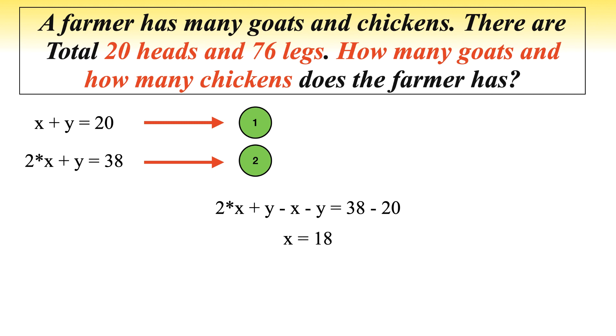After solving this equation, the value of x is 18. Substitute the value of x in equation 1, value of y becomes 2. Thus x equals 18 and y equals 2, which means number of goats equals 18 and number of chickens equals 2.